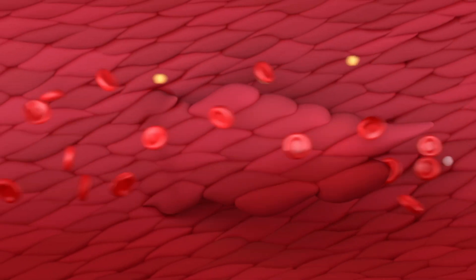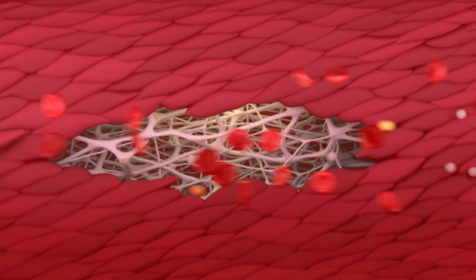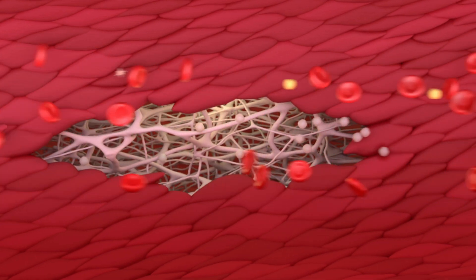Atherosclerotic plaque formation begins with a small injury to the endothelium, often caused by hypertension, high cholesterol, high blood sugar, or smoking.